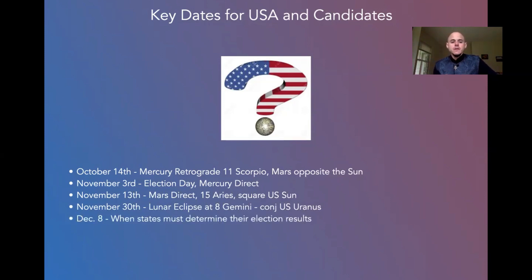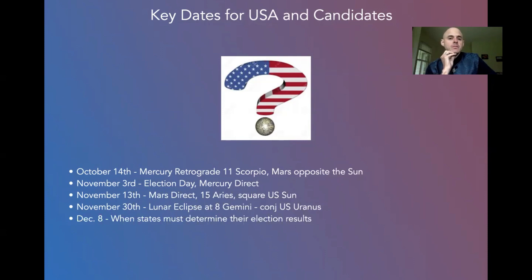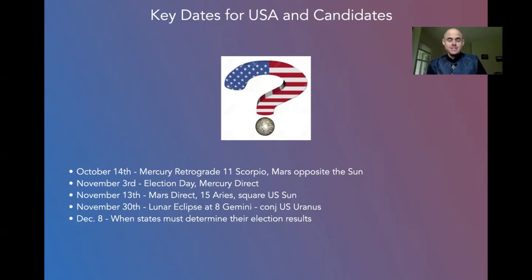December 8th is important — this is when states must determine their election results, having to do with the electoral college. I'm going to make a recommendation for an extremely important podcast interview with a writer who just wrote an article for The Atlantic about the fact that Trump has said that he won't concede a loss. He goes very deep into this whole process and the ramifications for the country, because we are not actually set up for this kind of situation. The whole principle of elections is that the presidential candidate loser will concede the loss. We don't really have a precedent for a president in office who doesn't concede.